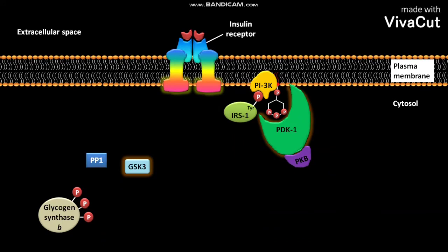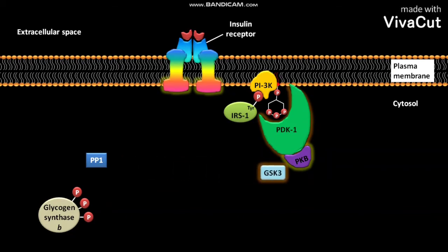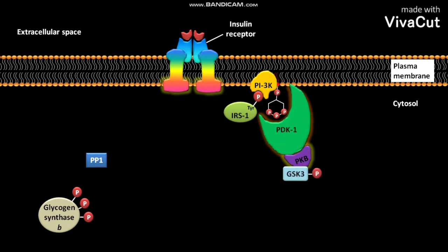PKB is another protein kinase. The active PDK1 binds to the inactive PKB, and this binding activates PKB. The active GSK3 then binds to the active PKB.